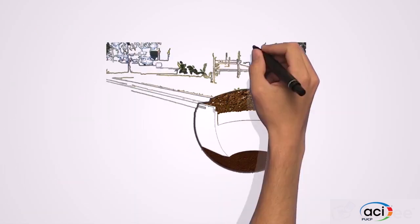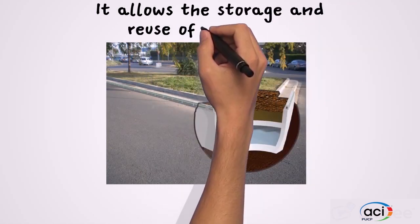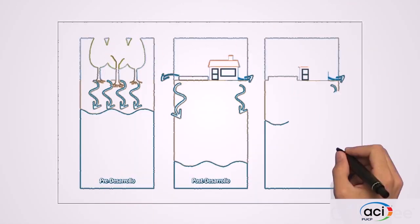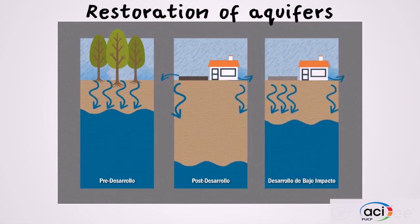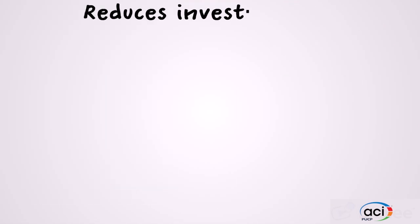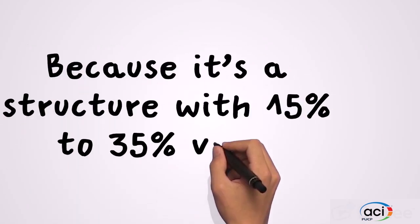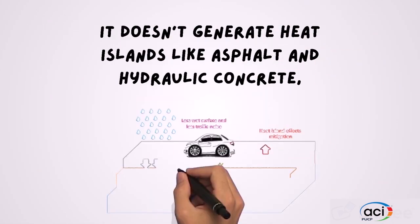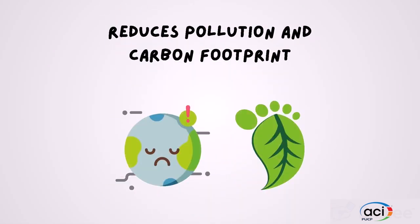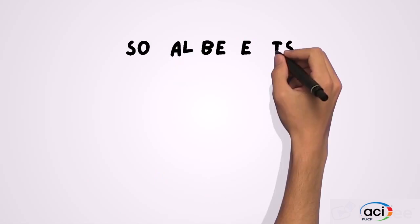Pervious concrete has environmental benefits. For example, it allows the storage and reuse of rainwater; therefore, it is part of ecological concrete because it doesn't change the natural water cycle. It also allows infiltration to the subsoil to achieve the restoration of aquifers and reduces investment in the construction and maintenance of drainage systems. Because it is structured with 15–35% voids, it doesn't generate heat islands like asphalt and hydraulic concrete, thereby reducing pollution and carbon footprint.